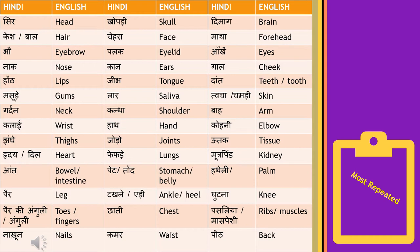'Chahra' is face, 'matha' means forehead, 'bhaun' is eyebrow. 'Palak' means eyelid. 'Aankhe' means eyes, 'naak' is nose, 'kaan' matlab ears. 'Gal' means cheek. 'Honth' means lips, 'jeeb' matlab tongue. 'Daant' means teeth or tooth.